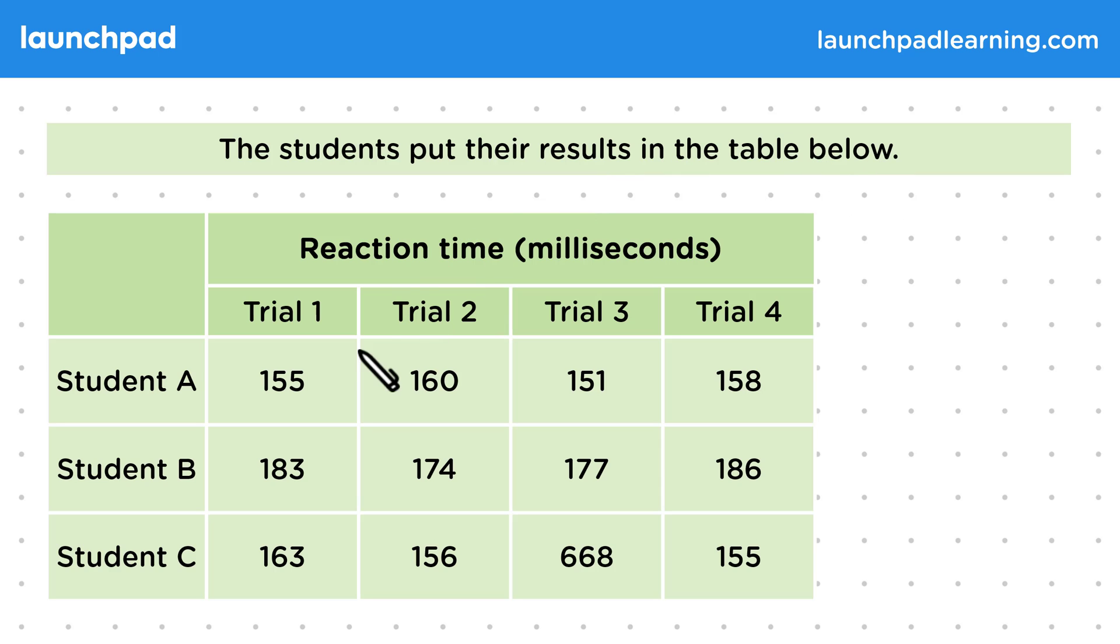Okay, so this table shows us the reaction time in milliseconds for each repeat of the experiment, so each trial is a different repeat. Remember, the reaction time is the time between the screen changing colour and the students responding to this. You can see there's a lot of numbers to compare, so how can we more easily compare these reaction times?